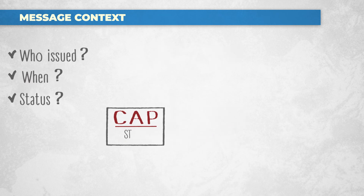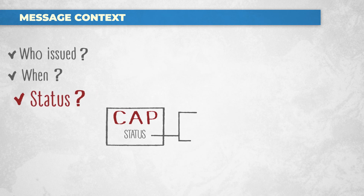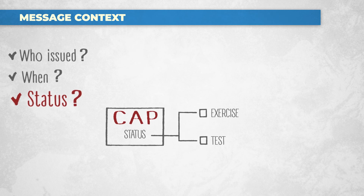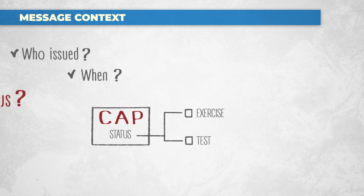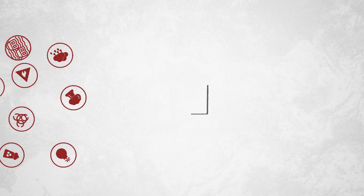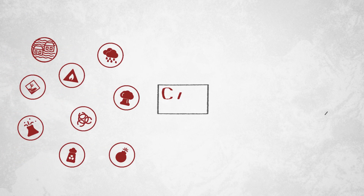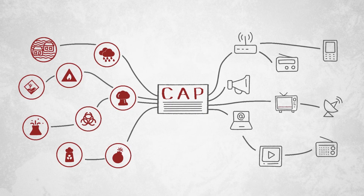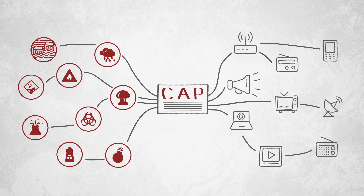Lastly, the status element allows a CAP message to be issued as an exercise or test, as it could be useful to run tests before issuing alerts to the public. CAP can be used for any emergency and shared by all media to ensure life-saving information quickly reaches people in harm's way.